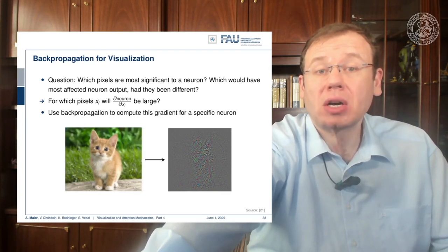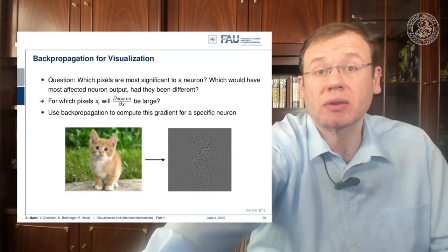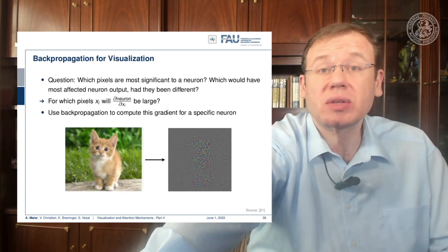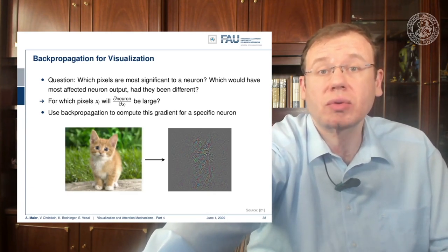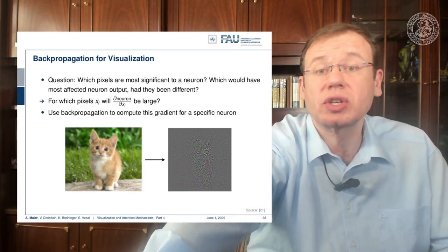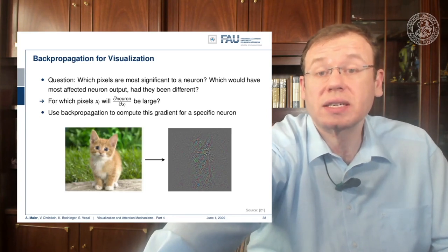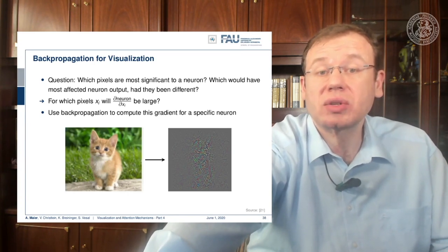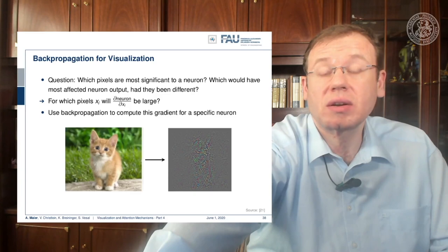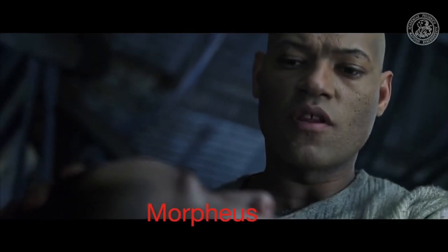What we actually want to compute is the partial derivative of the neuron under consideration — maybe an output neuron like for the class 'cat' — and then we compute the partial derivative with respect to the respective input. This is essentially back propagation through the entire network. We can then visualize this gradient as a type of image. You can see that this is a noisy image, but what is related to 'cat' is located in the area where the cat is actually located in the image.